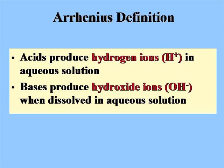The first definition of acids was the Arrhenius definition. Acids were defined as substances that produced hydrogen ions, or H+ ions, in aqueous solution. And bases were substances that produced hydroxide ions when dissolved in aqueous solution.